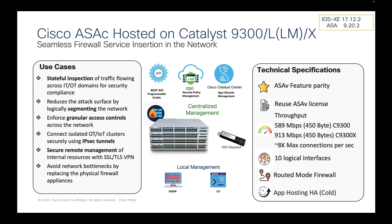This is the same feature set as ASA. So if you are familiar with Cisco ASA, the functionalities are exactly the same when you are running ASAc. The difference is that ASAc is a lightweight Docker container that can run on Catalyst 9K, while ASA is a VM packaging. You can even reuse ASA licenses for brownfield deployment, and for greenfield deployment, ASAc licenses will be available.